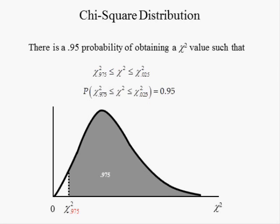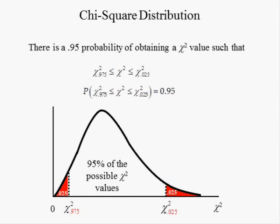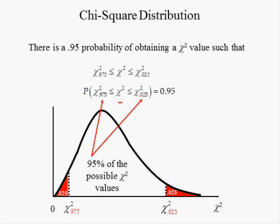Because the probability of being greater than chi-square subscript 0.975 is 0.975, we shaded the area to the right of it gray. The area to the left of chi-square subscript 0.975 is 0.025, shaded red. Because the probability of being greater than chi-square subscript 0.025 is 0.025, we shaded that right area red. 95 percent of the possible values of chi-square are between chi-square subscript 0.975 and chi-square subscript 0.025. Notice that if we subtract the subscripts we get 0.95.